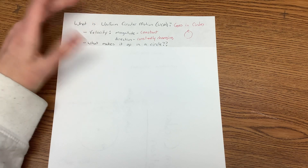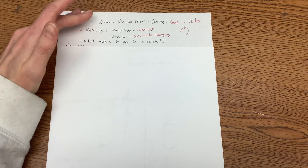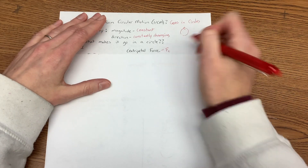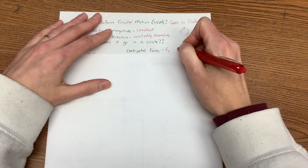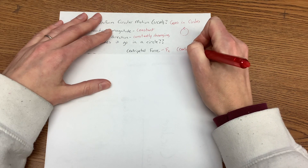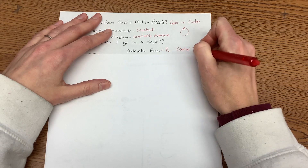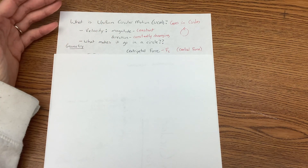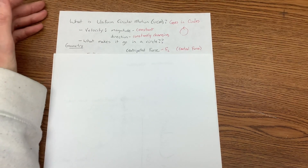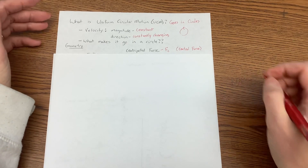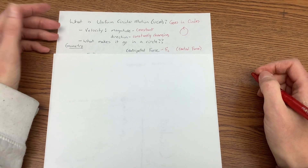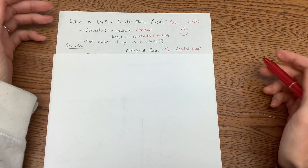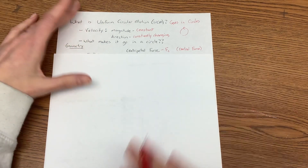What makes it go in a circle? Well, we call that a centripetal force, abbreviated FC. Sometimes we call it the central force. A variety of forces could supply the central force — it could be gravity, it could be tension, it could be a normal force, it could be an electric force, a magnetic force. There are all sorts of different types of forces out there that it could be.